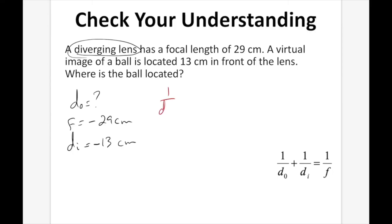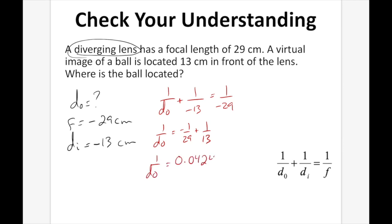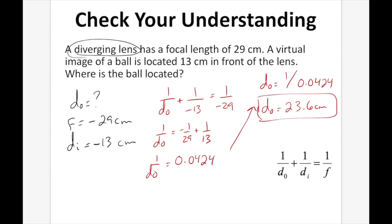Plugging in: 1 over DO plus 1 over negative 13 equals 1 over negative 29. Rearranging: 1 over DO equals negative 1 over 29 plus 1 over 13, which gives 1 over DO equal to 0.0424. So DO equals 1 divided by 0.0424, giving DO equal to 23.6 cm. The object is located 23.6 cm from the lens on the same side as the image.